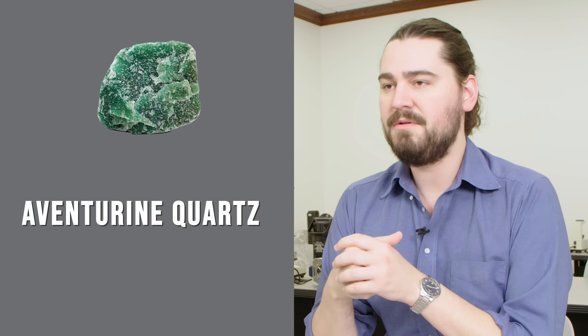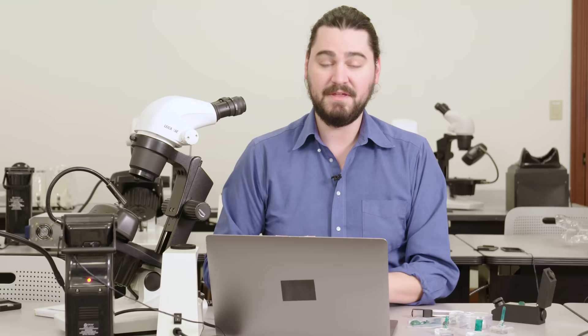This is a quartzite. The body color of aventurine quartz is not actually green. Its green appearance is given to it by mica inclusions inside of the stone. So aventurine quartz is usually kind of like a milky white sort of off-gray body color, but it is littered with green mica inclusions that make it look completely green. But when you scrutinize it and when you look at it, especially with a 10x loupe, you realize, oh, this isn't a green stone. It's just full of green mineral inclusions.